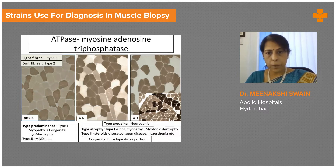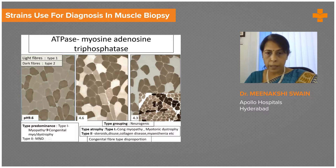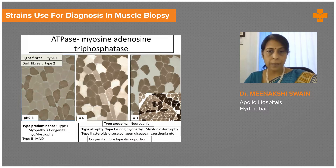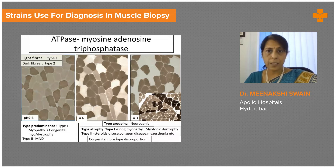Similarly, type grouping — groups of similar fibers staining similarly — is a neurogenic feature. Type-specific atrophy also gives us a clue as to the disease. Type 1 atrophy is typically seen in congenital myopathies and myotonic dystrophies, whereas type 2 atrophy is more nonspecific, often seen in disuse — patients with weakness who could not walk, or those on steroid therapy. Collagen diseases and a number of other conditions can show nonspecific type 2 atrophy. One congenital myopathy, congenital fiber type disproportion, cannot be diagnosed unless these stains are done, because the differing proportions of fiber types cannot be highlighted on H&E.